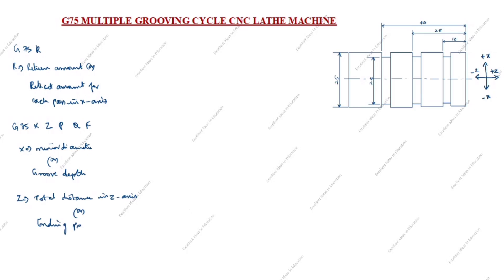Next P, P is depth of cut in X axis. P is the depth of cut increment.